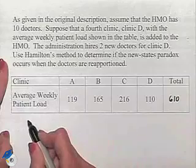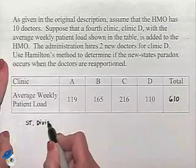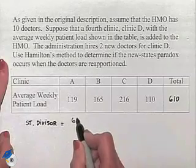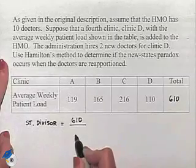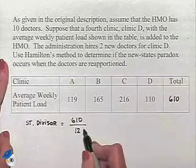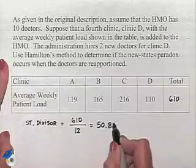We now need to find our standard divisor for this value. We're going to take our total of 610 and divide by the number of items to be apportioned. That would be 12 doctors. And we're going to come up with our value of 50.83.